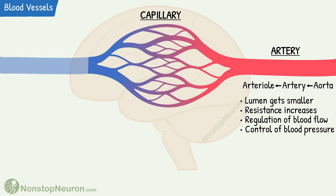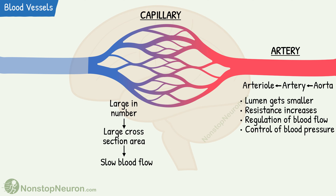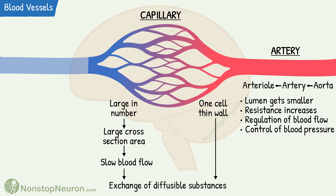Many capillaries arise from each arteriole. Due to their large number, the total cross-sectional area of the capillary bed is very large. As a result, blood flow velocity becomes quite slow in the capillaries. Also, the wall of the capillaries is only one cell thick. The slow blood flow and thin wall are ideal for exchange of diffusible substances between blood and tissue, and that's the exact function of capillaries — the exchange of substances.